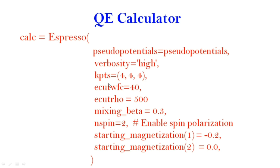For the Quantum ESPRESSO calculation I will list all the parameters: pseudopotential, verbosity, k-points, cutoff wave function, cutoff density, mixing beta, and magnetization. I have discussed how to create such a file in the last lecture.